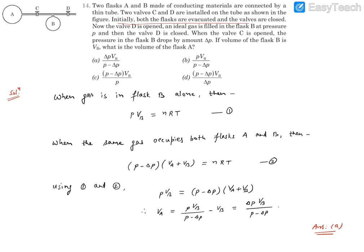Initially both flasks are evacuated and the valves are closed. Now valve D is opened and ideal gas is filled in flask B at pressure P, then valve D is closed. When valve C is opened, the pressure in flask B drops by delta P. If the volume of flask B is VB, what is the volume of flask A?